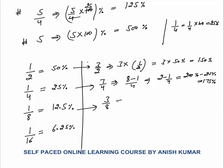Three by 8 is 3 times 12.5 percent, which equals 37.5 percent. Very important: 3 by 8 equals 37.5 percent, and reversing this, 37.5 percent means 3 by 8. What about 5 by 8? No need to multiply 12.5 by 5 — instead, split it as 4 plus 1 by 8.